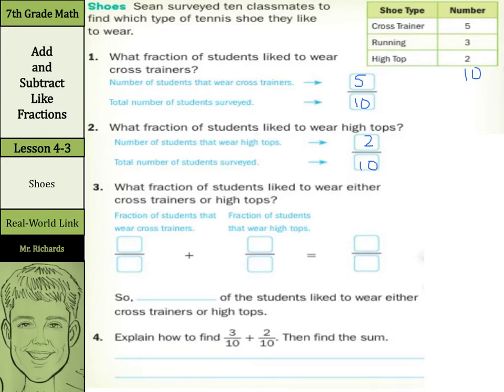Excuse me again. And what fraction of students liked to wear either cross trainers or high tops? Well, the cross trainers was 5 out of 10. The fractions that wear high tops was 2 out of 10. And when we add these, it's 7 out of 10. So, 7 tenths of the students liked to wear either cross trainers or high tops.